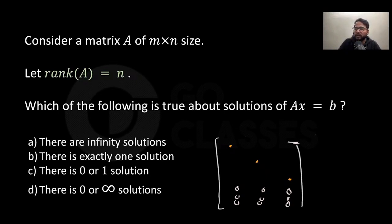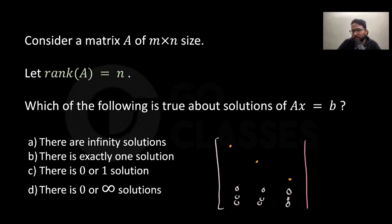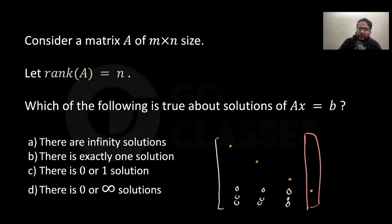Now, what is true about the solutions of Ax=b? A solution may or may not exist — it depends on b. Whatever b you bring, it depends on whether the corresponding entry is zero or non-zero. If it is non-zero, there is no solution.